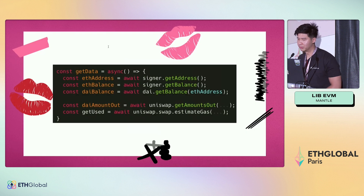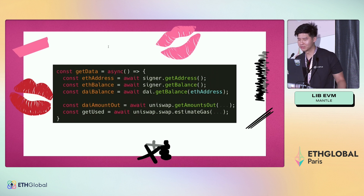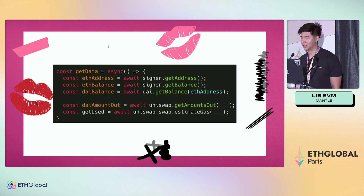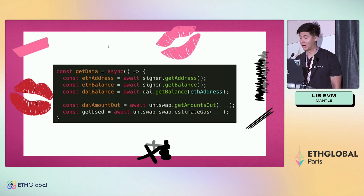A very simple example of how one might approach this data extrapolation: you get the ETH address, from that you get the user's balance, then from the balance you get the user's DAI balance and ETH balance, and then the amount of DAI the user will get given that data. This is terrible, mainly because it is blocking — to get the DAI balance, you first have to get the ETH balance, and so on. This is incredibly bad.